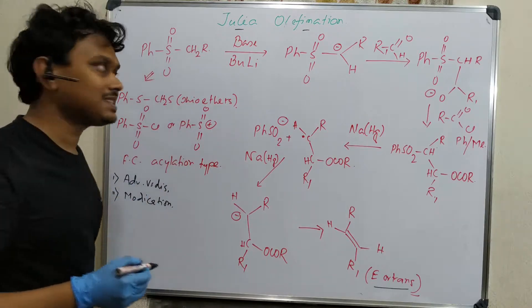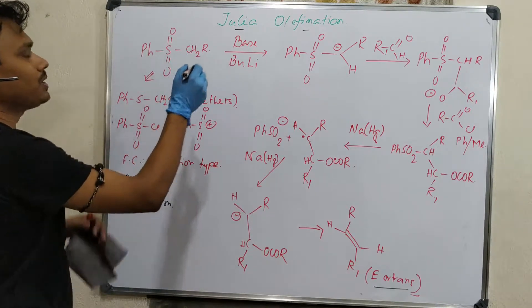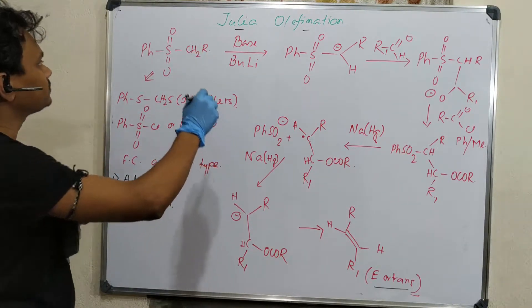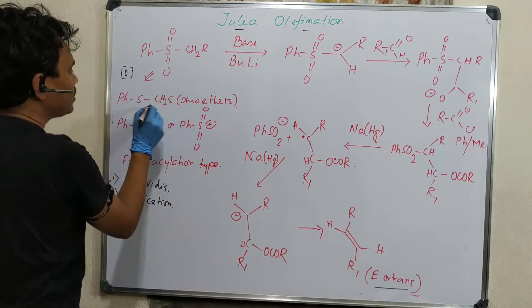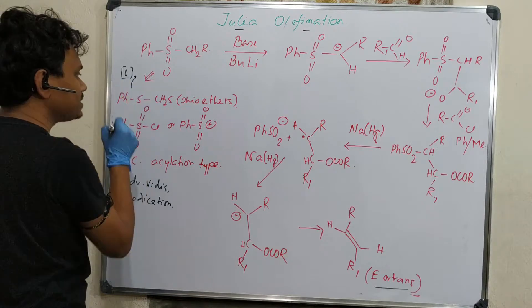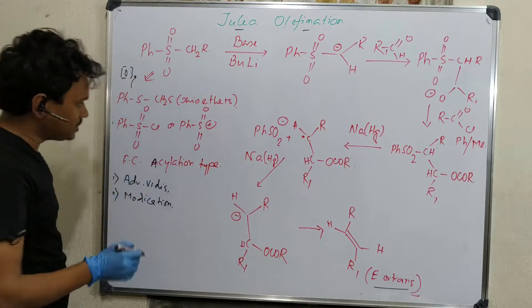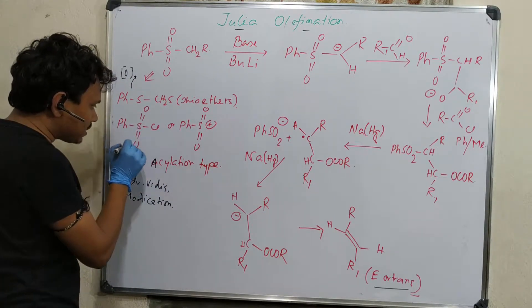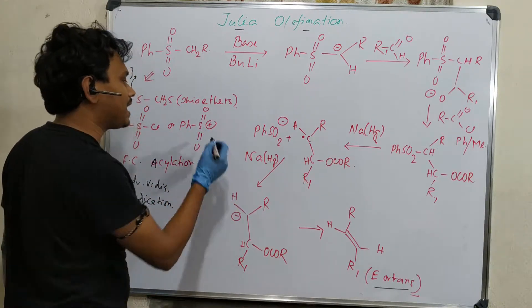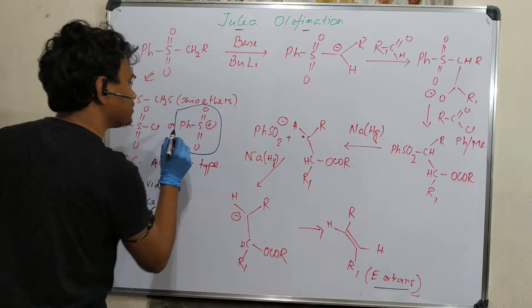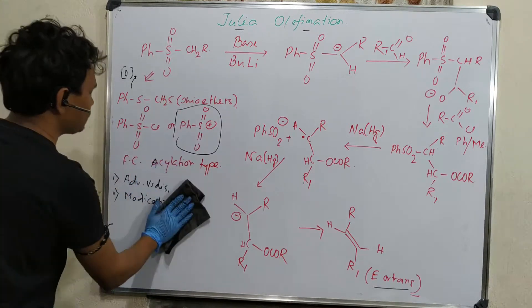Before going to details, this is a sulfur-stabilized ylide. How it produces corresponding sulfone? This is prepared by oxidation of corresponding thioether. Second strategy is Friedel-Crafts acylation type reaction using phenyl sulfonyl chloride or sulfonyl anhydride, which produces this cation and undergoes Friedel-Crafts acylation to produce this final product.